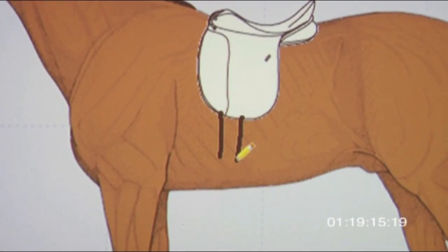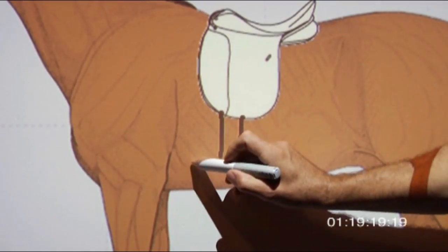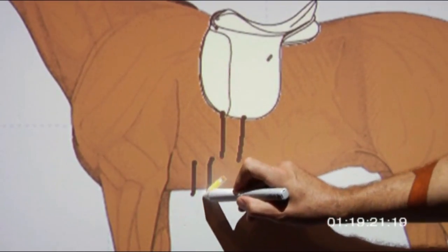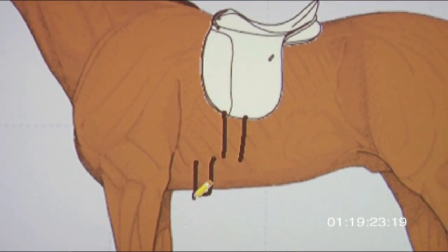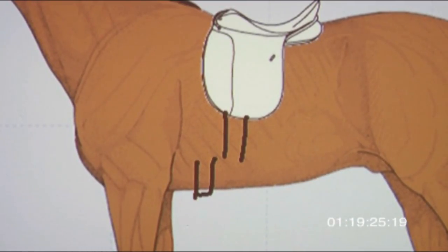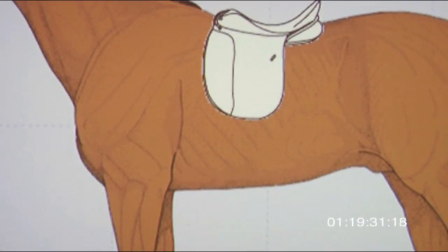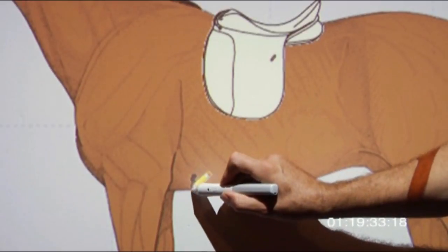Now the billets should always be perpendicular and match straight up where the girth area is. Here you can see on this particular case, these billets hang too far back of the girth area. If I say, okay, here's the girth area